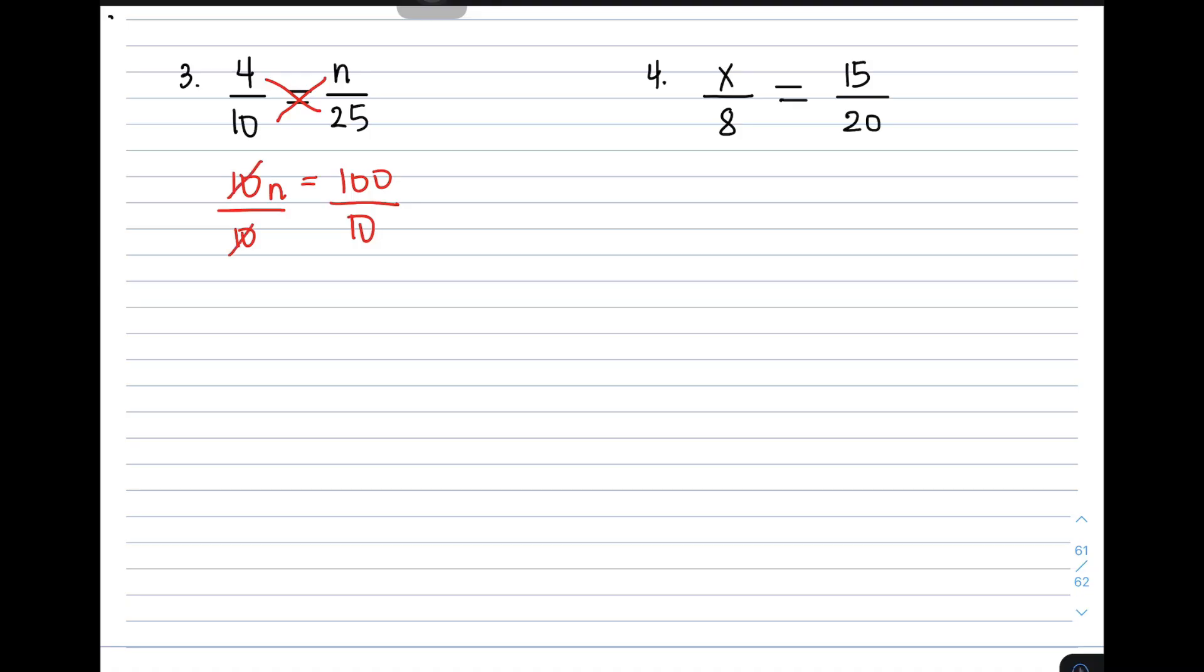So we can eliminate 10 and 10, it will give you n is equal to 100 over 10. The simplified form is 10. Therefore, the value of n is 10.